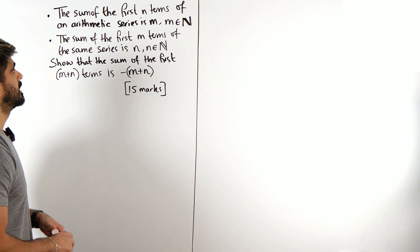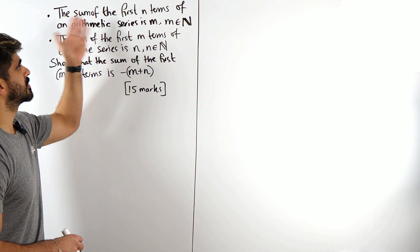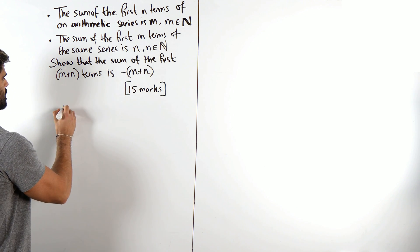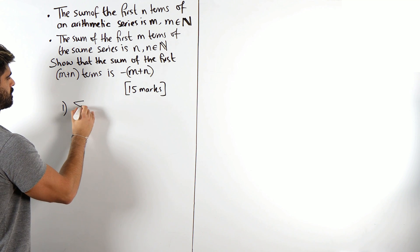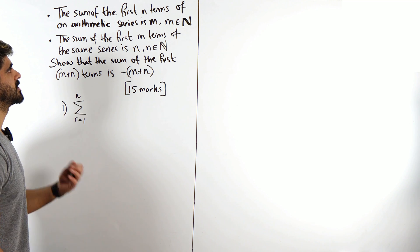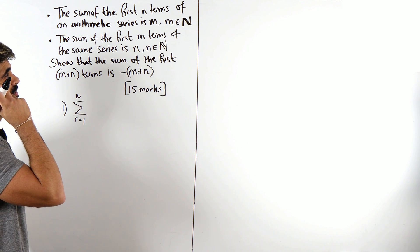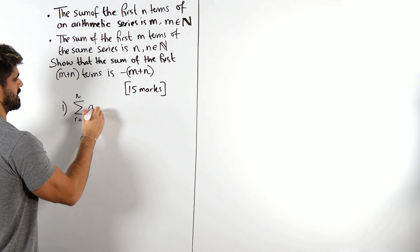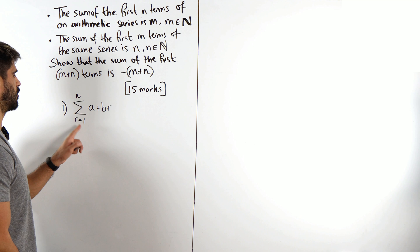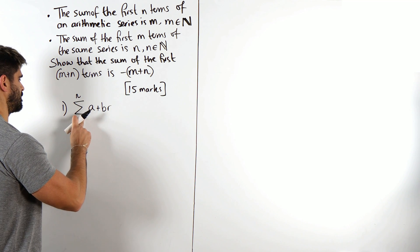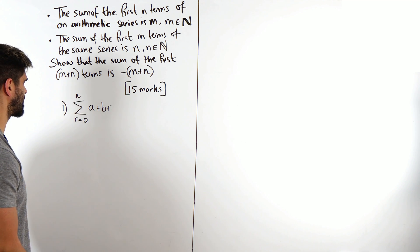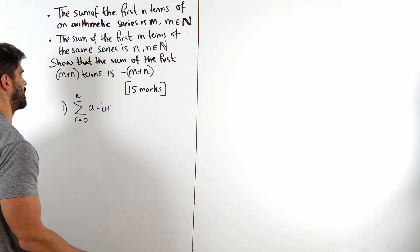It says the sum of the first n terms of an arithmetic series is m, where m is a natural number. Then the sum of the first m terms of the same series is n, where n is a natural number. Show that the sum of the first m plus n terms is the negative of m plus n. 15 marks.